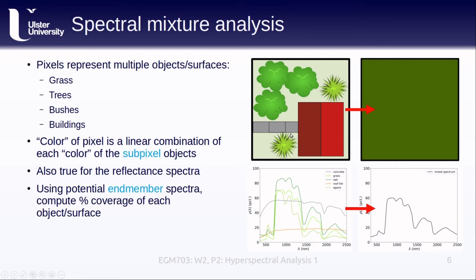In spectral mixture analysis, we use the measured spectra of each of these potential end-members: concrete, grass, oak trees, roof tiles, agave bushes, etc., to compute the percent coverage in each pixel of each of the different end-members. Like with spectral angle mapping, this approach requires that we've identified our potential end-members beforehand, so it helps to have some prior knowledge about the study area.